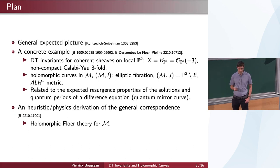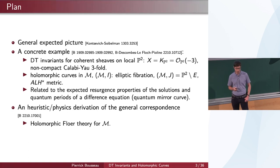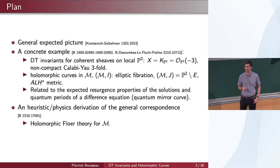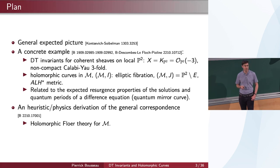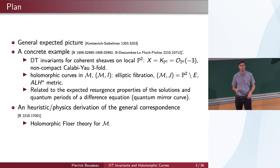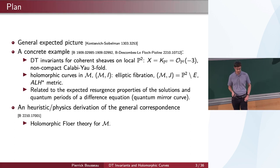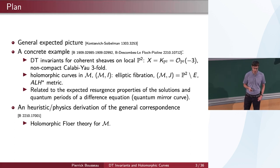In this specific example the non-compact Calabi-Yau threefold will be so-called local P², which I will always denote by X. It's a total space of the canonical line bundle O(-3) over the complex projective plane P². So it has a compact part — the complex projective plane — and it's a total space of a line bundle over it, forming a non-compact complex dimension three geometry.